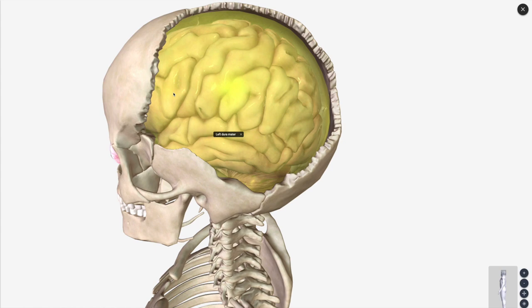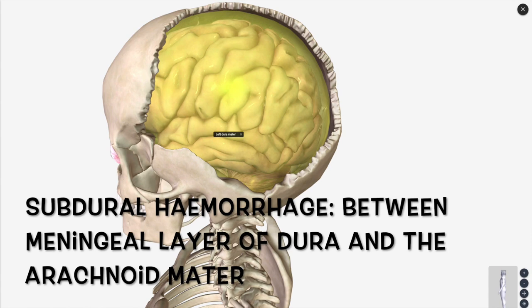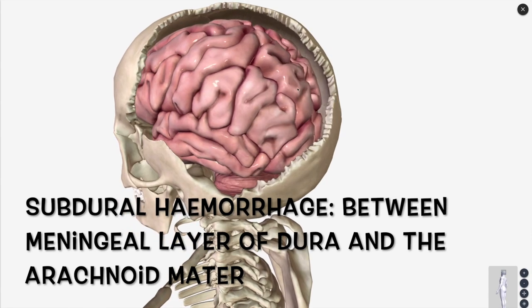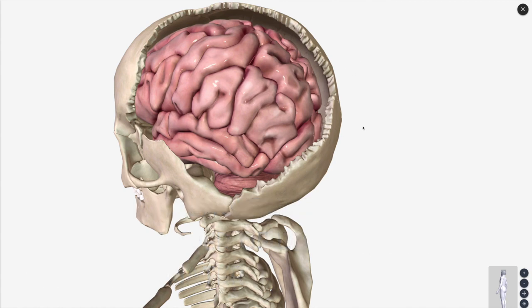The next one we want to talk about is a subdural hematoma. The blood is going to be collecting between the meningeal layer of the dura and the arachnoid matter. So let's remove the dura. The arachnoid matter would be covering this area here. Essentially, the dura is the first layer, then you've got arachnoid — so between the dura and the arachnoid is where you find your subdural hematoma. These bleeds tend to be a little bit slower, a little bit longer — for example, a patient who has fallen and this bleed has slowly progressed.